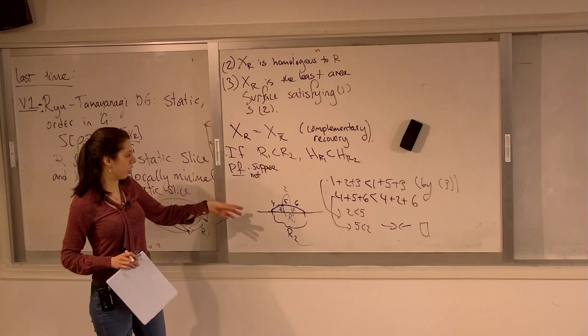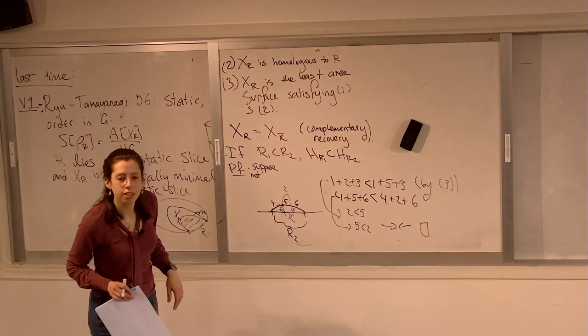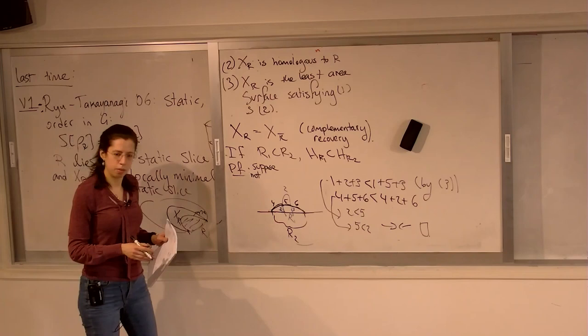This is the basic type of argument we use for RT surfaces. A somewhat more sophisticated version of this gives you the fact that the Ryu-Takayanagi area satisfies strong subadditivity, which is a very fundamental inequality about the von Neumann entropy. Areas 4, 5, and 6 correspond to the pieces I've broken the surface into — you can still compute the area of each piece.